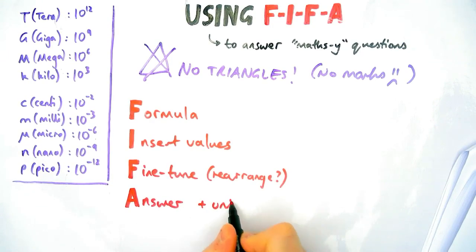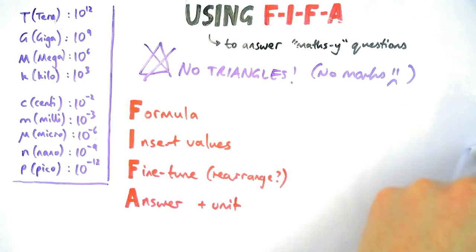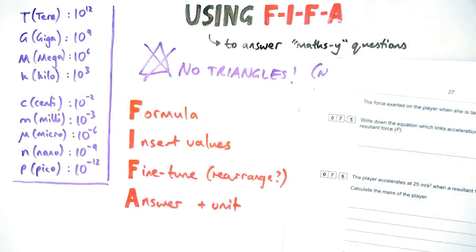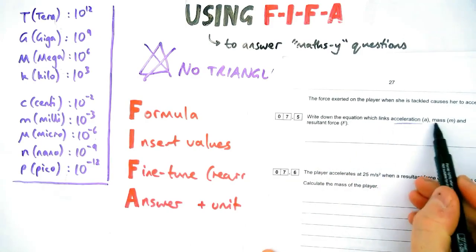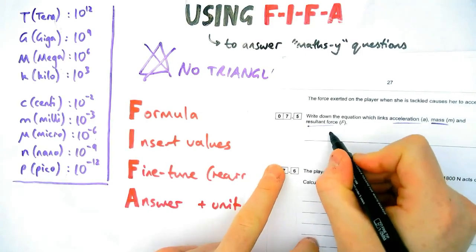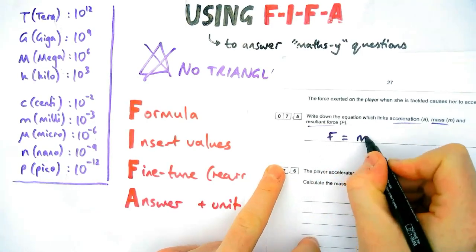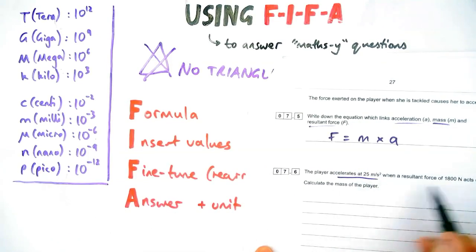Now this is easy to learn in theory, but it has to be practiced to be able to do properly in the exam. So let's have a look at a question. This question says write down the equation that links acceleration, mass, and force. So that's the easy bit. Look at your equation sheet: it's F equals m times a.